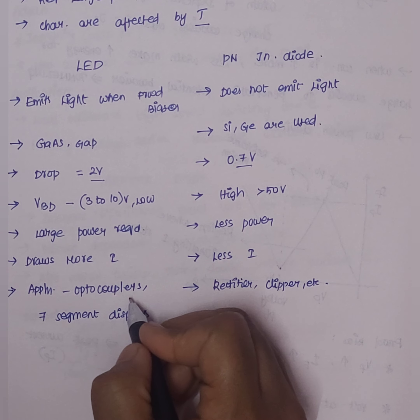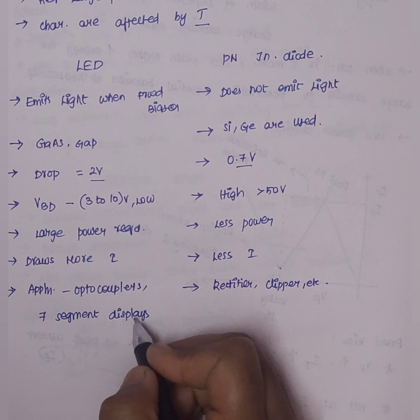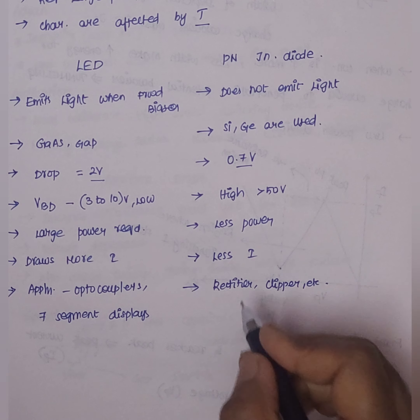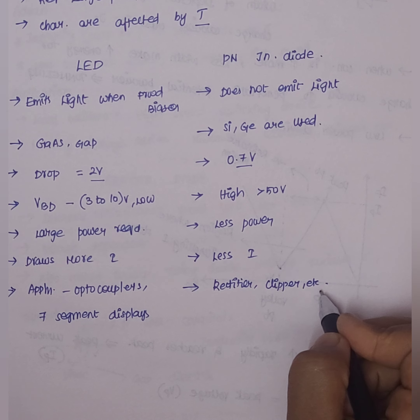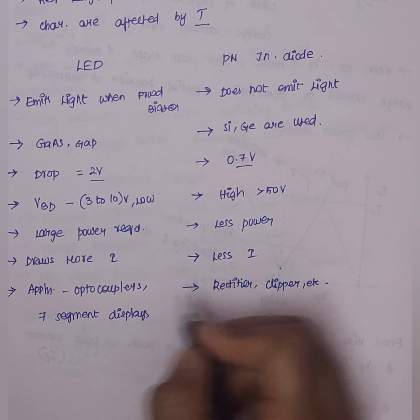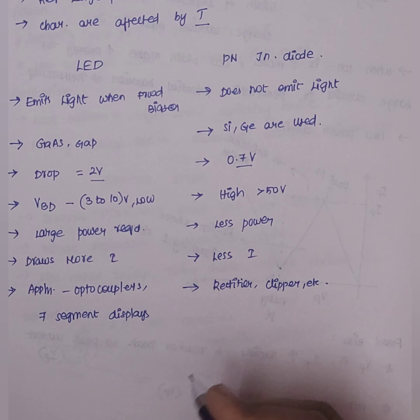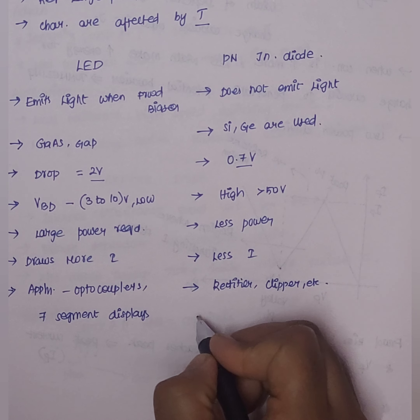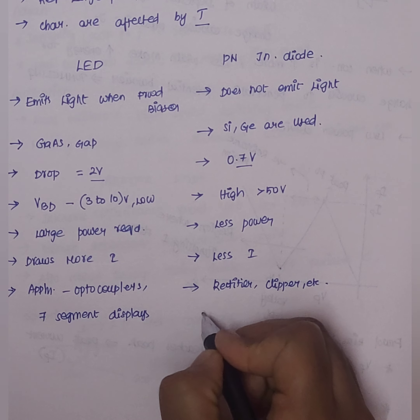For applications, we use LEDs in optocouplers and 7-segment displays. We use rectifiers or clippers for PN junction. In a 7-segment display structure, we have segments A, B, C, D, E, F, and G.